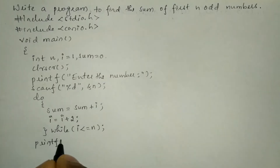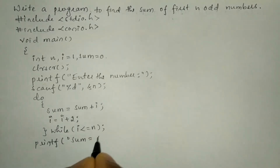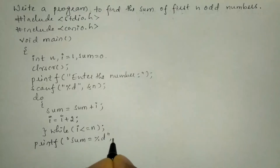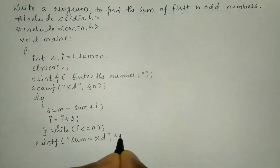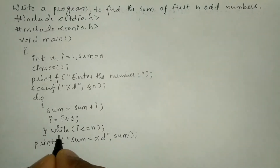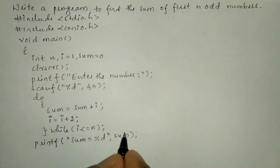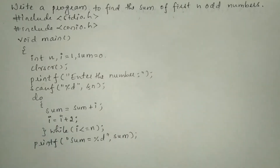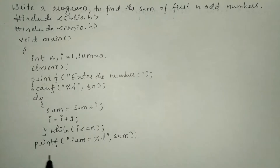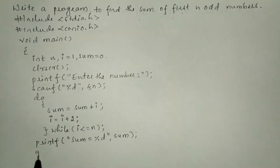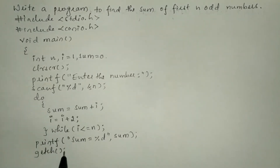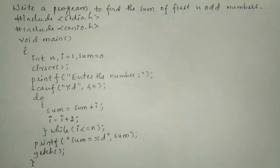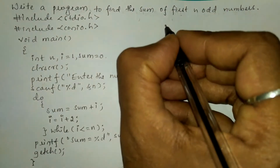Now we are going to print the sum using a printf statement. In double quotation marks I'll write 'sum is equal to percentage d', end the double quotation mark, put comma and write the variable sum, which holds the actual value. Next we are going to write the getch function, then curly closing brace for the main function.